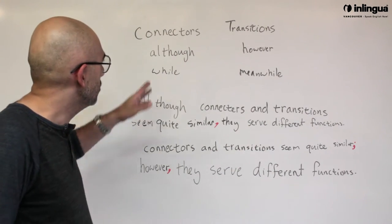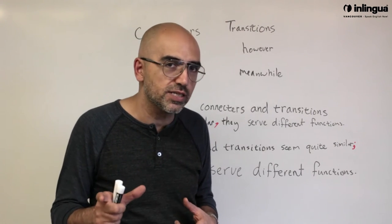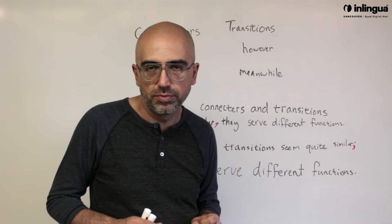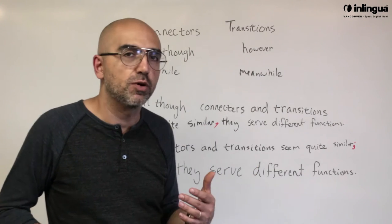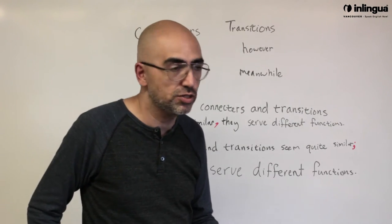So you see, with a connector you're connecting two clauses. One of those clauses, which is a subject verb predicate. The other one is a subject verb predicate as well but it depends on the other one. That's a dependent clause.